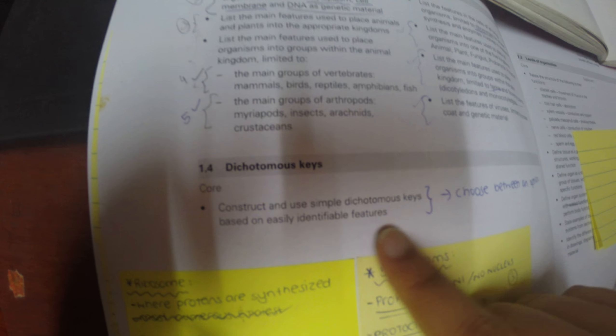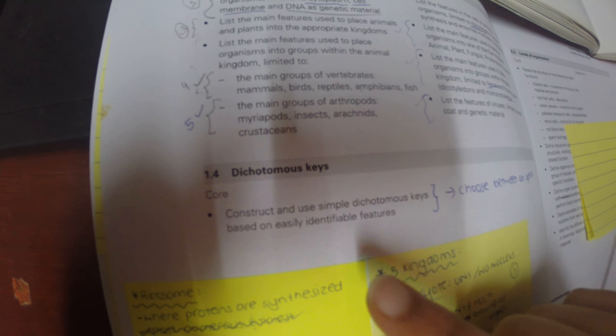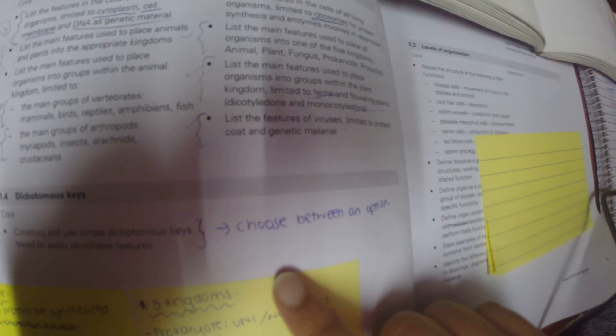Okay, 1.4. Today we're going to be doing 1.4 which is dichotomous keys or simple keys, so constructing and using simple dichotomous keys based on easily identifiable features. Basically, dichotomous keys, you have to choose between an option.